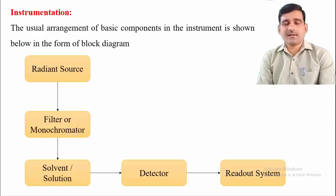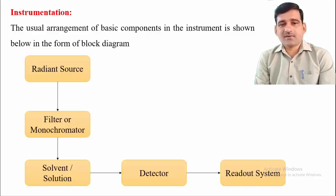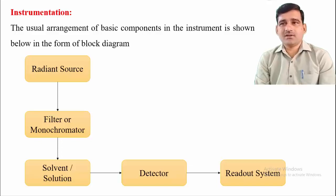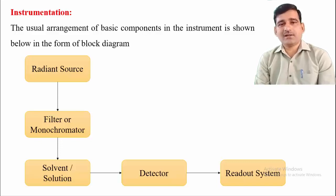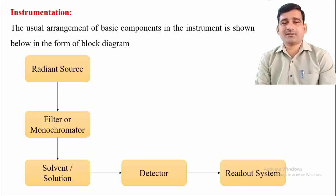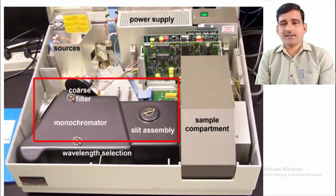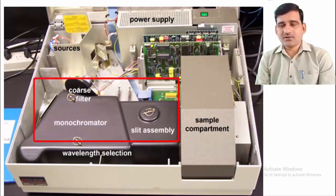Finally, the signal goes to the readout system, which gives the output in terms of a chart or digital signals showing how much light is absorbed and how much is transmitted by the sample solution. This is the block diagram of the spectrophotometer, which generally has five basic components: radiant source, filters or monochromators, solvent or solution compartment (sample cell), detector, and readout system.